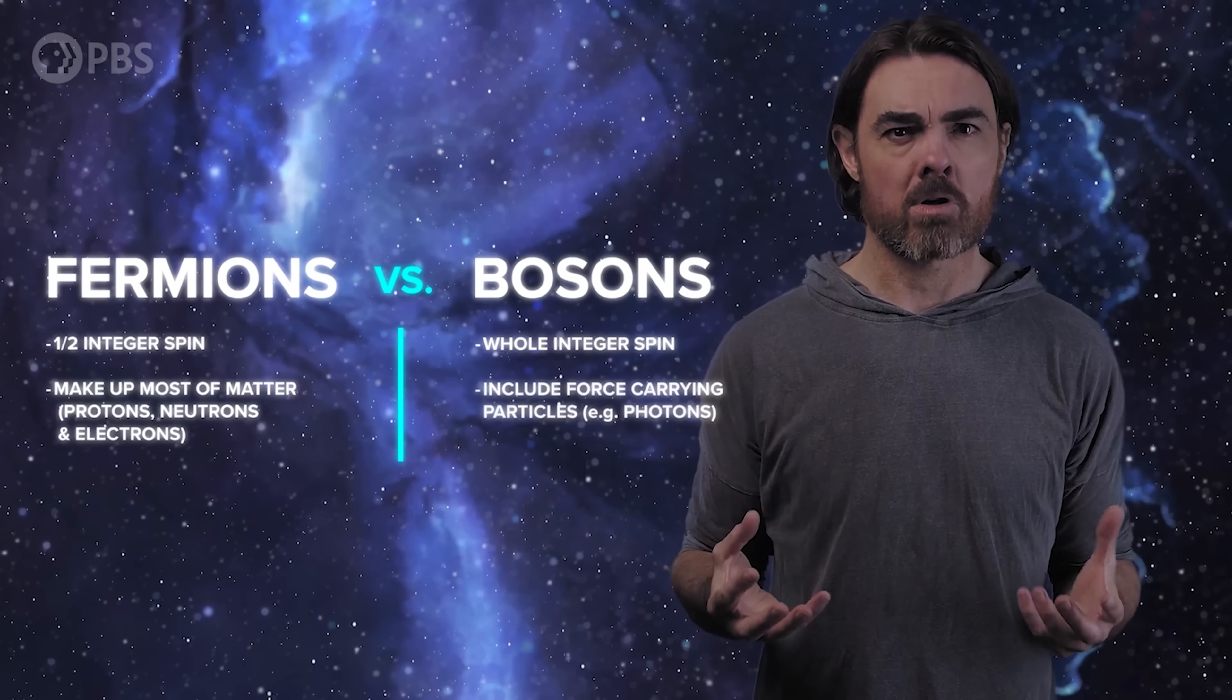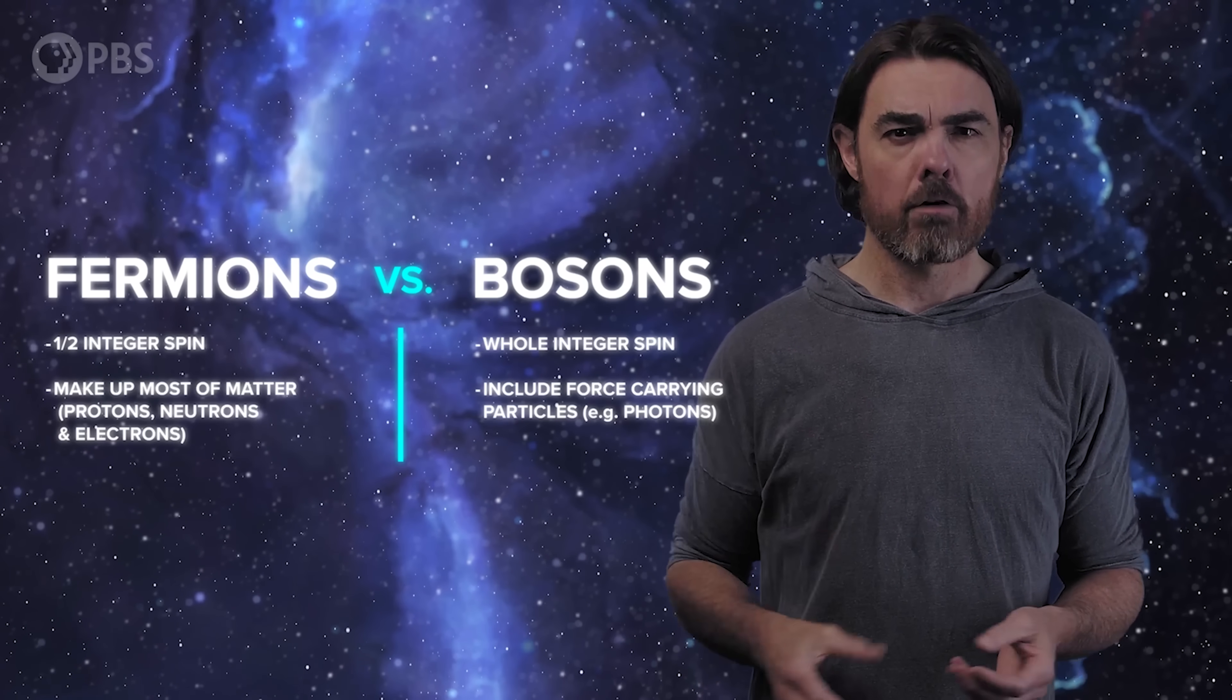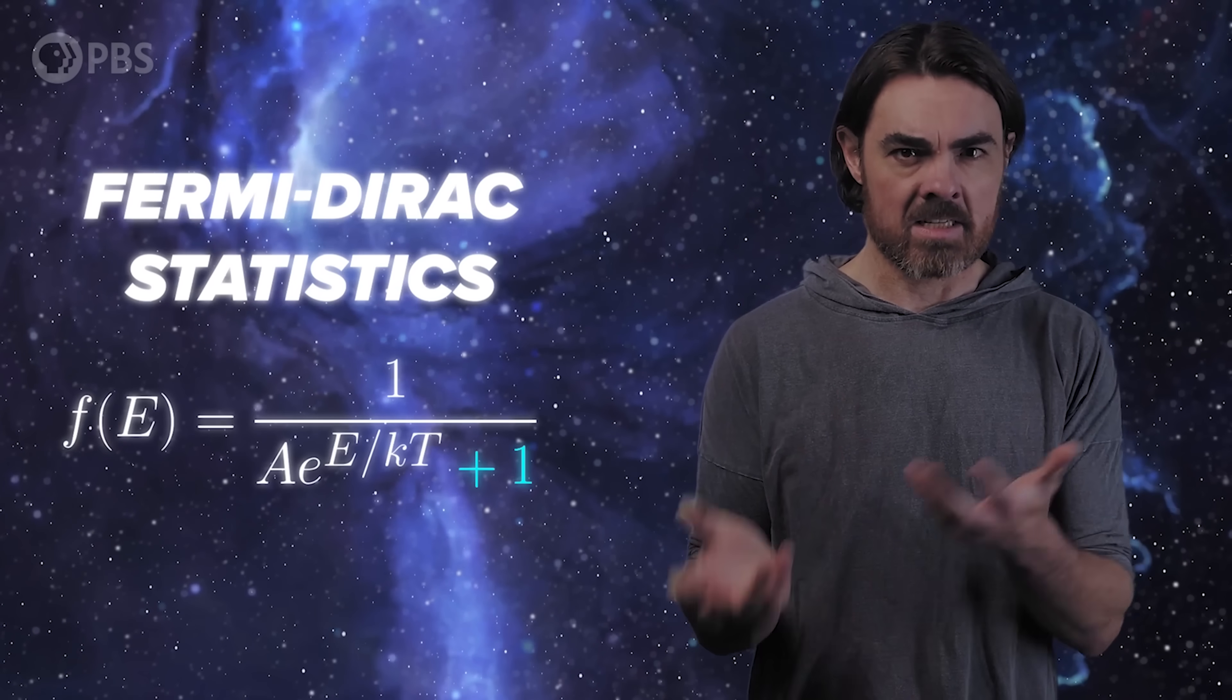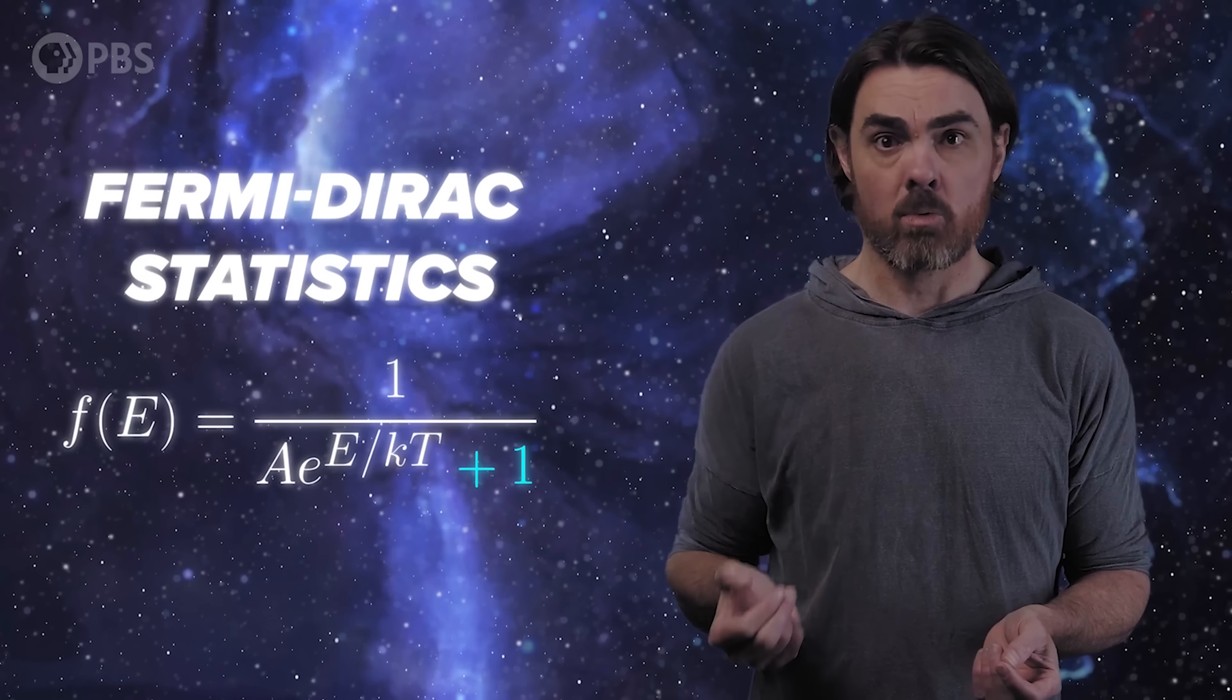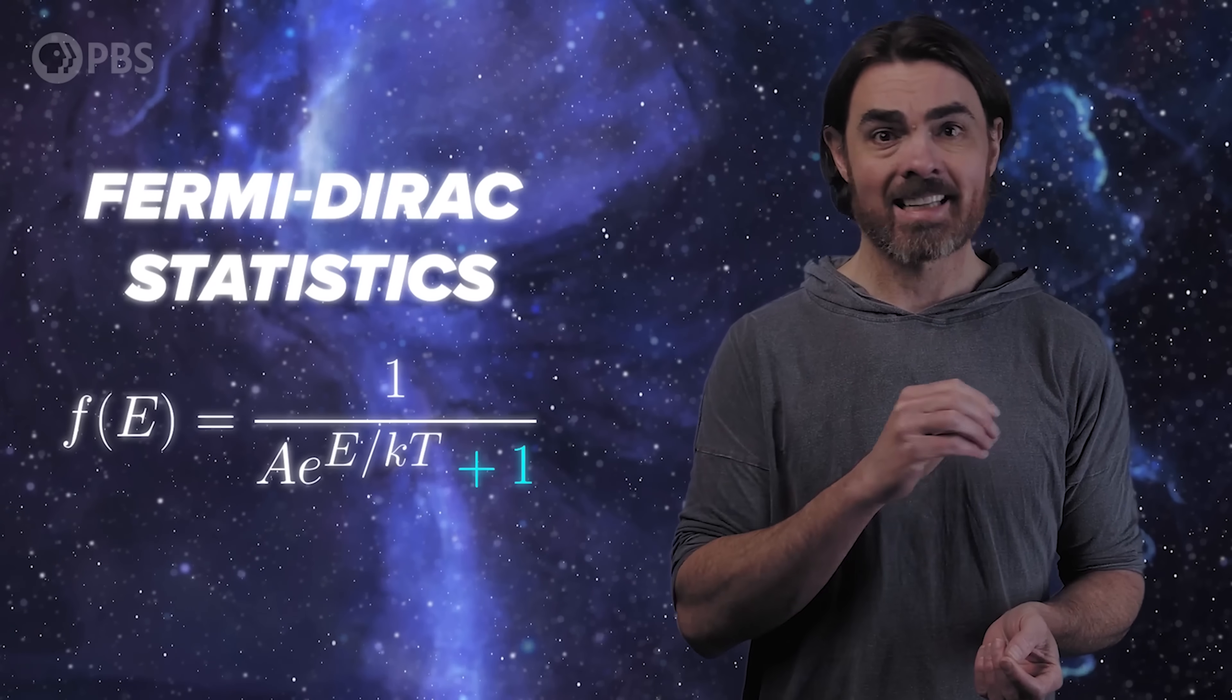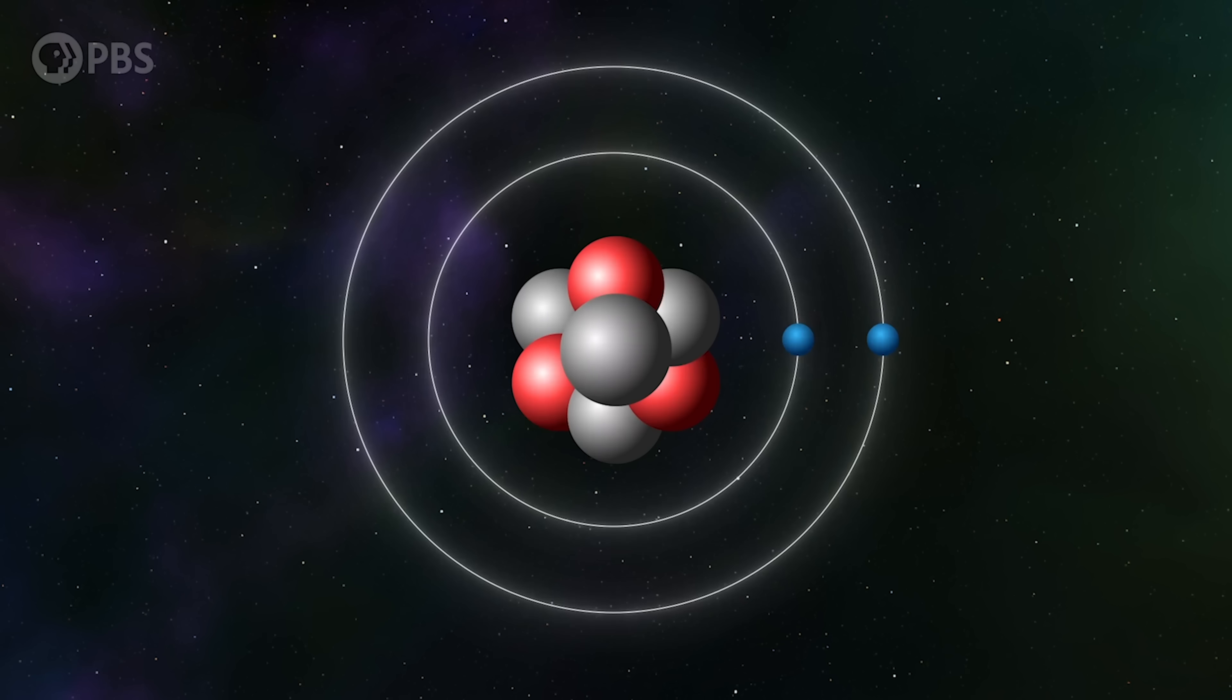They can also make bosons out of combinations of spin-half fermions, for example, the helium-4 atom. Fermi-Dirac statistics look similar to our other statistics types, but now the minus one from Bose-Einstein becomes a plus one. Again, this makes little difference for high temperatures, but at low temperatures, things get weird. Because fermions can't all fall into the single lowest energy state, they instead fill up all of the available low energy states with one particle per state.